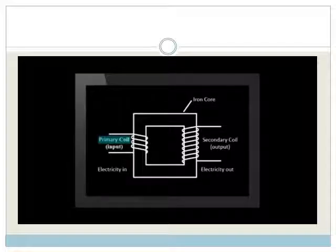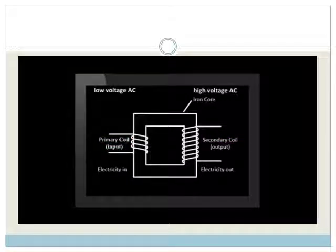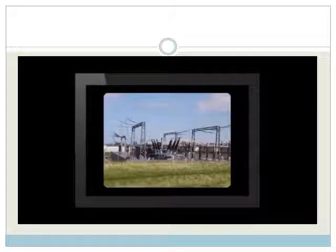Remember earlier in the episode, I told you that alternating current is better than direct current for long distances. That's because alternating current can be used in a transformer to change the voltage. The alternating current in the primary coil creates a constant change in the magnetic flux in the second coil.